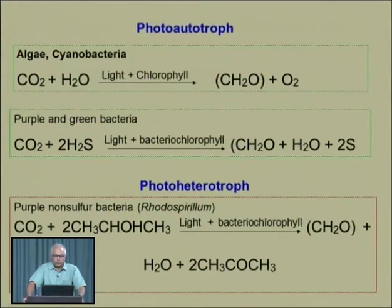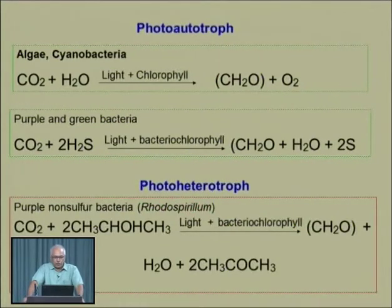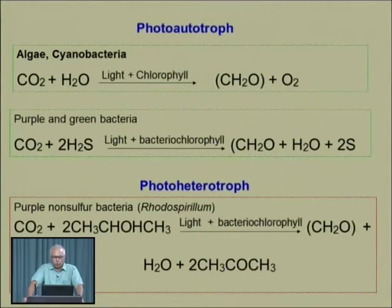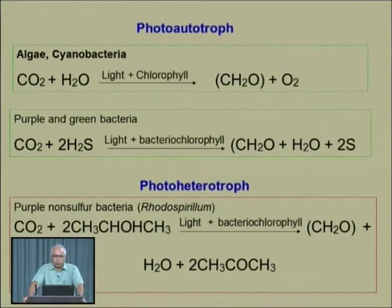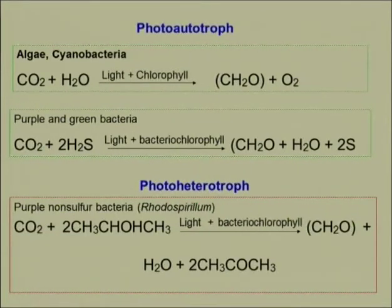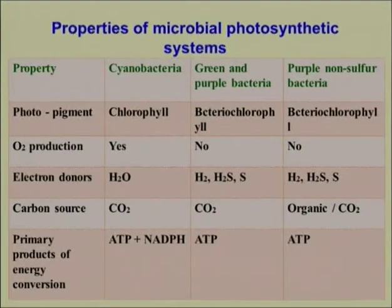For photo-heterotrophs, the chemical reaction involves carbon dioxide reacting with CH3CHOHCH3 (isopropanol) in the presence of bacterial chlorophyll. The products formed are CH2O plus water, and a more complex compound CH3COCH3 (acetone) is also liberated. The organisms performing this reaction are purple non-sulfur bacteria, with a specific example being Rhodospirillum.